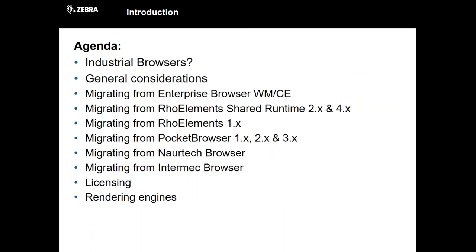The agenda for today: I'm going to go over what industrial browsers are quickly. I'll assume most people are familiar with them, but it's worth reiterating some general considerations as you move from older Windows Mobile CE devices to our newer Android devices, and then taking each in turn the possible migration paths you might be going to. Over the years — I joined the company in 2008 when Pocket Browser was a couple of years old — we've had a number of product lines that are all industrial browsers with backwards compatibility with each other.